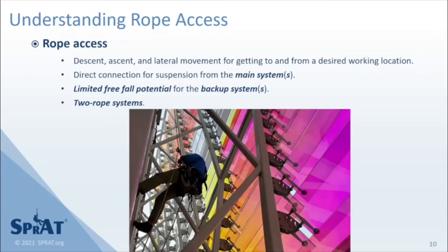These concepts are incorporated in SPRAT's definition of rope access: techniques that allow descent, ascent, and lateral movement for getting to and from a desired working location, that utilize direct connections for suspension from the main systems, and that focus on limited freefall potential for the backup systems. Typically, these techniques employ interchangeable two-rope systems.